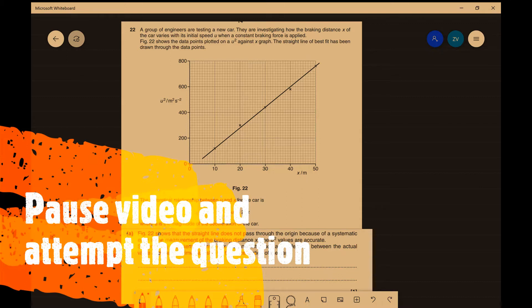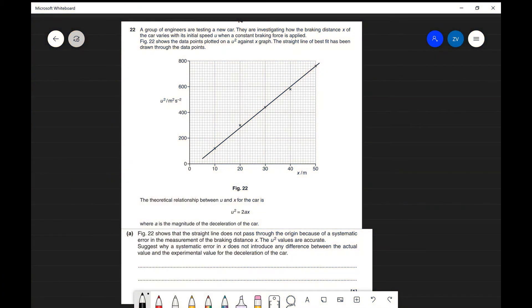Now let's have a look at the solution. What the question is actually asking us is, figure 22 shows that the straight line does not pass through the origin because of a systematic error in the measurements. The v squared values, though, are accurate. Suggest why a systematic error does not introduce any difference between the actual value and the experimental value of the deceleration of the car.